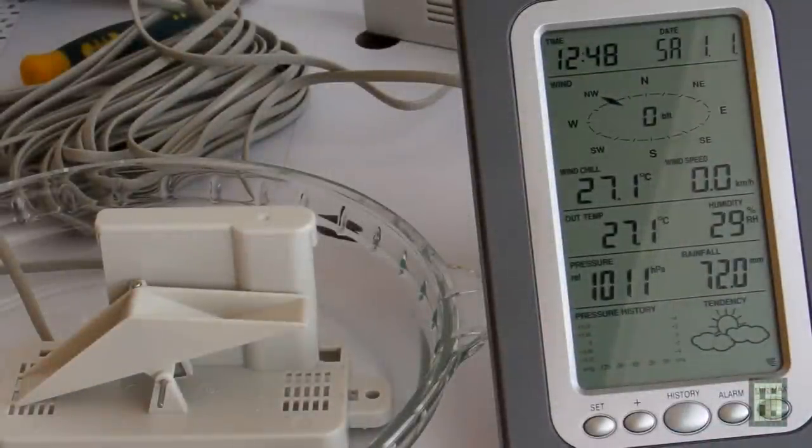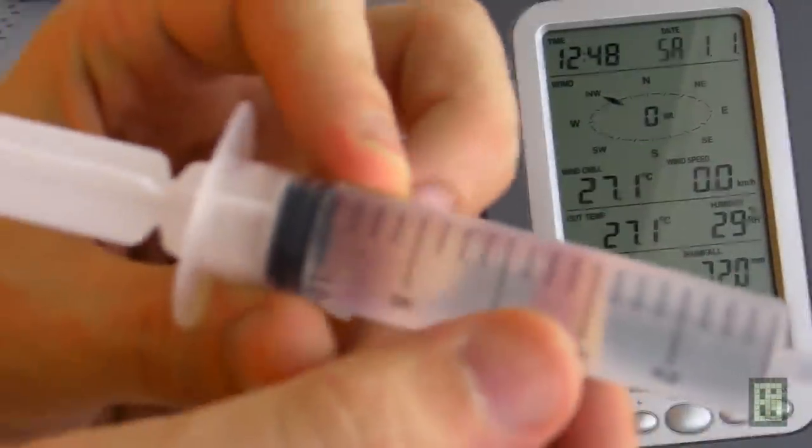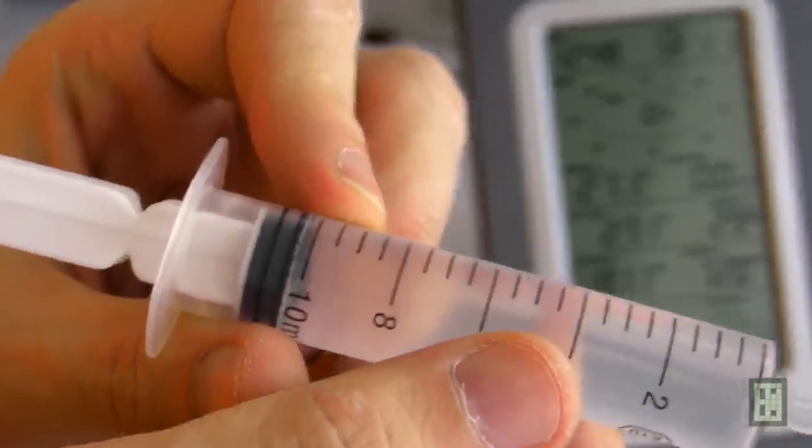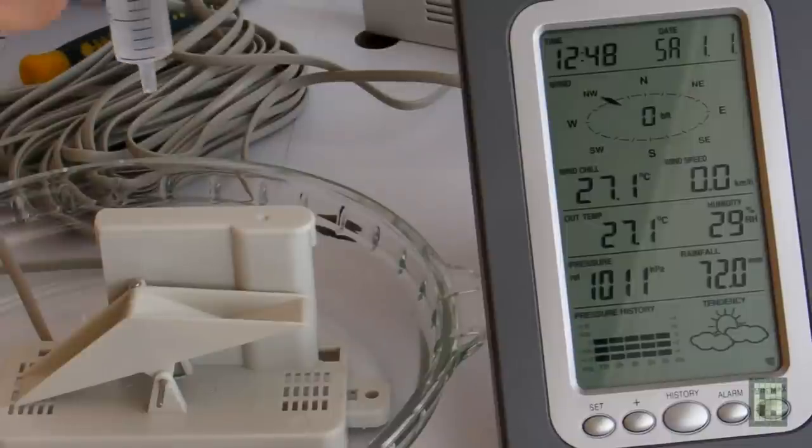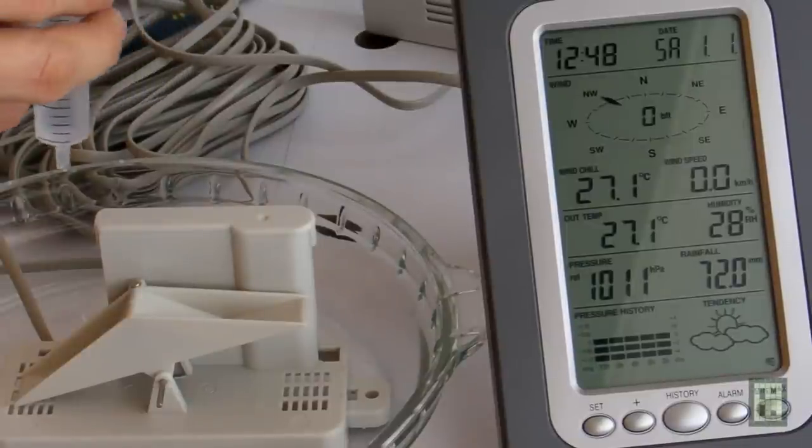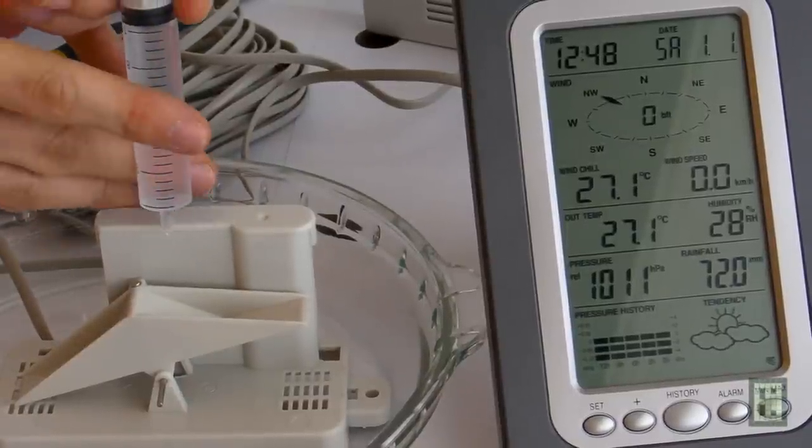I hope you can see. Okay, now let's make a test. We have 10 ml of water. And you see, I didn't reset the rainfall, it's 72 mm now.